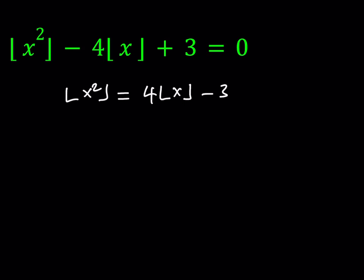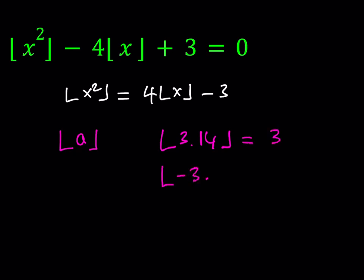So let's remember the definition of the floor function before we get started with the solution. The floor value of any number a is defined as the greatest integer less than or equal to a. In other words, you're basically rounding down the number. So if I have the floor value of 3.14, you're going to get 3. But on the other hand, if you are taking the floor value of negative 3.14, then it should be negative 4 because you're always rounding it down.